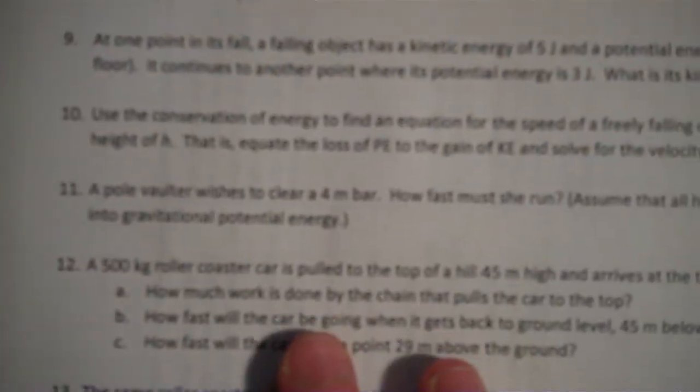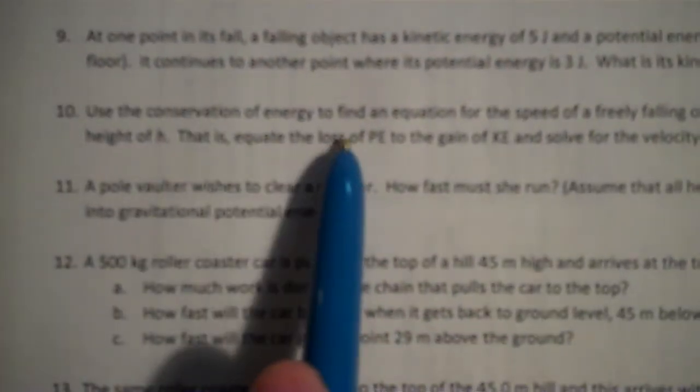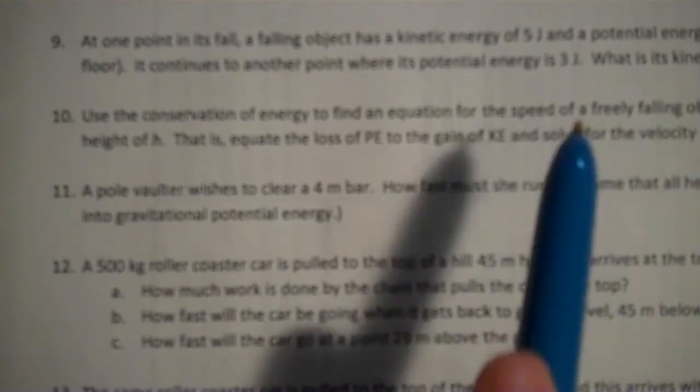All right, so for number 10, it says, use the conservation of energy to find an equation for the speed of a freely falling object that falls from rest at a height of h.